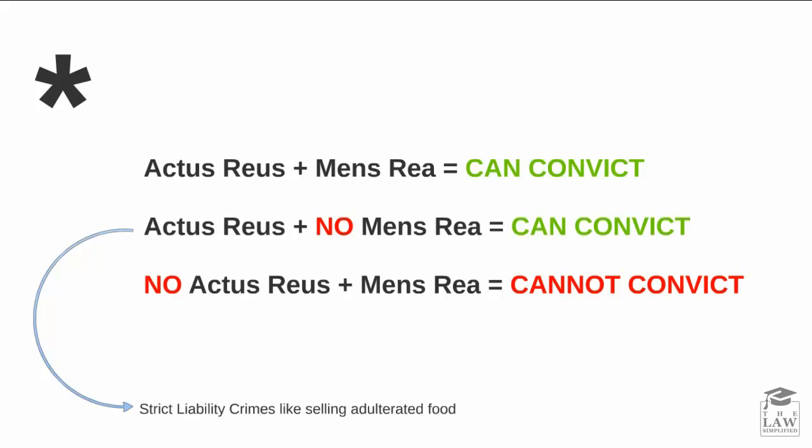To recap, we outlined the difference between the actus reus and the mens rea, with emphasis on the actus reus element itself and how it plays a key role in determining the act or the omission, the circumstance, and the consequence. We looked at how the actus reus is a vital component in any crime, and the demarcation based on the Theft Act, Section 1.1. In the next lesson, we are going to look at an exciting area in relation to actus reus called automatism, which is also used as a defense.